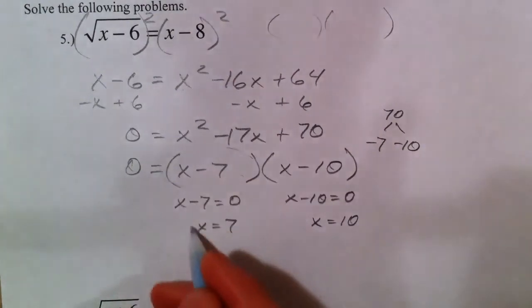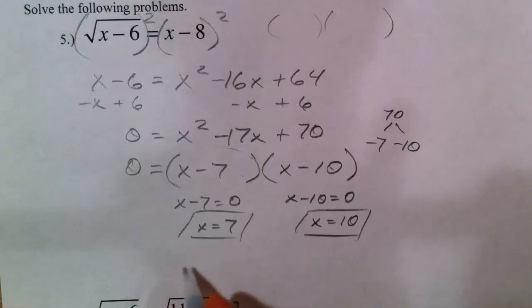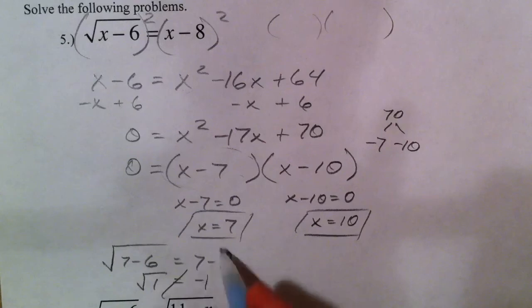A lot of you are going to go straight to this. Before we get done, we need to make sure we check it. Extraneous solutions could be in here. So, square root. 7 minus 6. 7 minus 8. 7 minus 8 is a negative 1. No way you can get a square root. Because this is square root of 1. This is not going to work out. And so, our 7 is not going to work out.